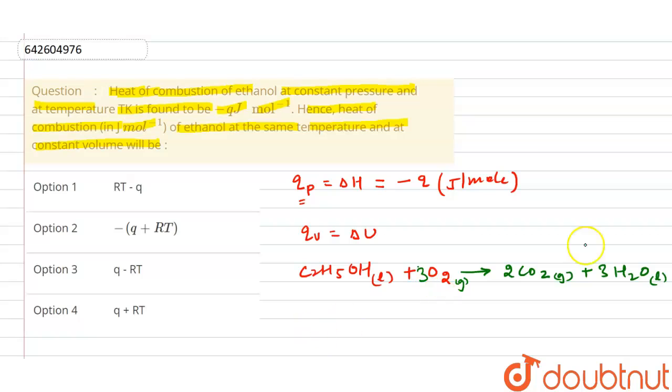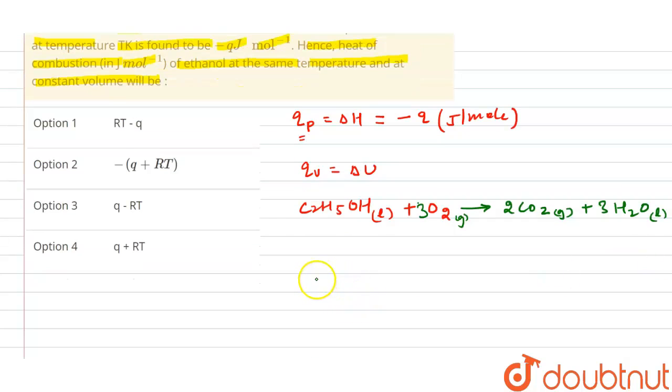Now we know the expression that ΔH equals ΔU plus Δng RT. From here we have to find the value of Δng. Δng is basically number of moles of product minus number of moles of reactant for the gaseous species only.